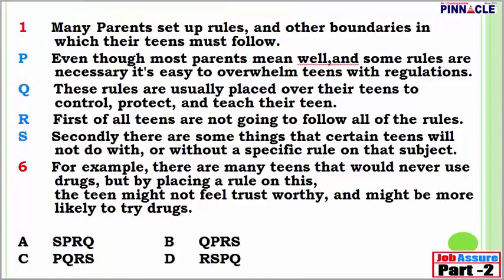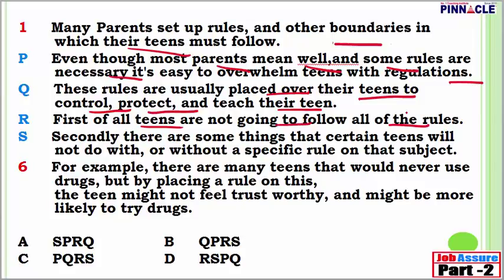First one: Many parents set up rules and other boundaries which their teens must follow. Even though most parents mean well and some rules are necessary, it's easy to overwhelm teens with regulations. These rules are usually placed over their teens to control, protect, and teach their teen. First of all, teens are not going to follow all of the rules. Secondly, there are some things that certain teens will not do with or without a specific rule on that subject. For example, there are many teens that would never use drugs, but by placing a rule on this, the teen might not feel trustworthy and might be more likely to take drugs.